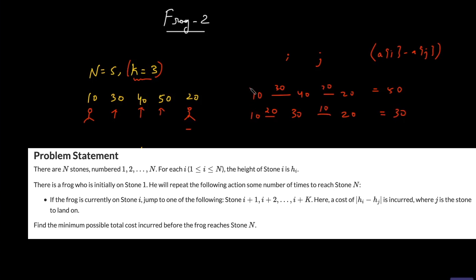You've got to try all the possible combinations and whoever gives you the minimum cost, you've got to take that. Like in this case, we will get a minimum cost of 30. So 30 is our answer.